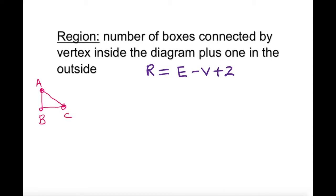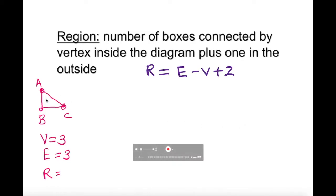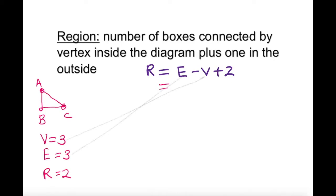How many vertices in this case? There are three vertices. How many edges? There are also three. How many regions? I can use the formula or just look: one inside, one outside — so two regions. Or I can plug it into the formula: edges is three minus vertices is three plus two.